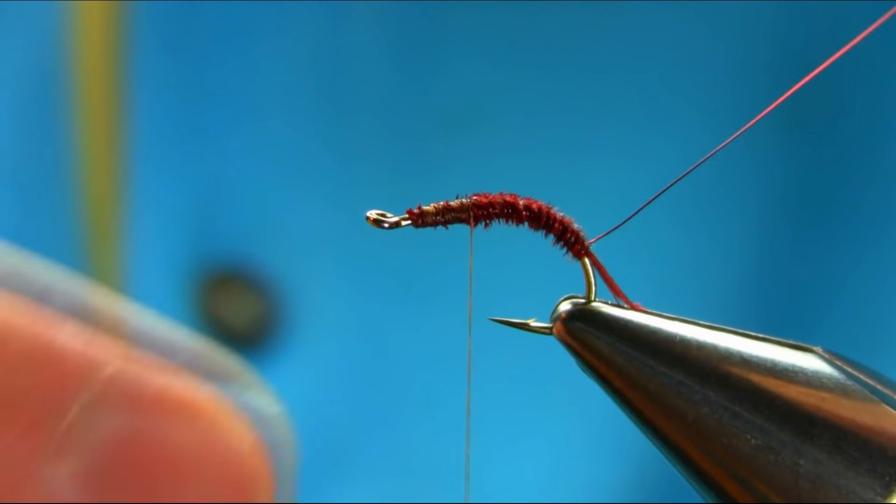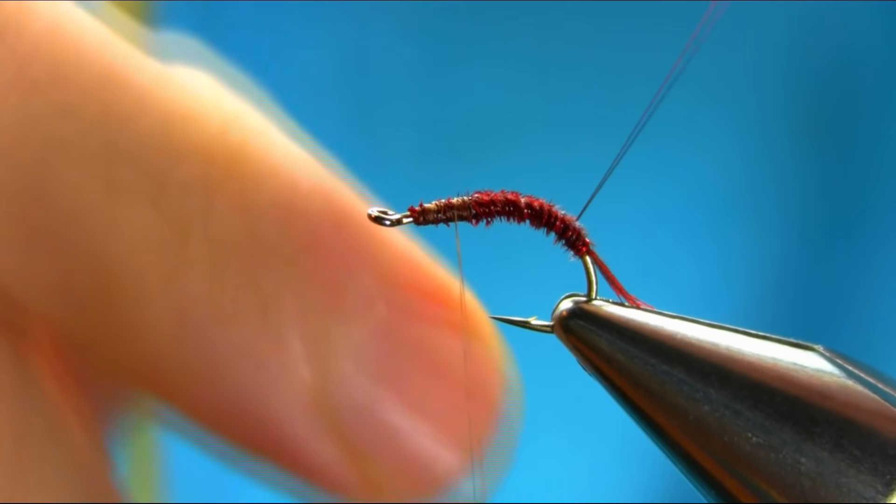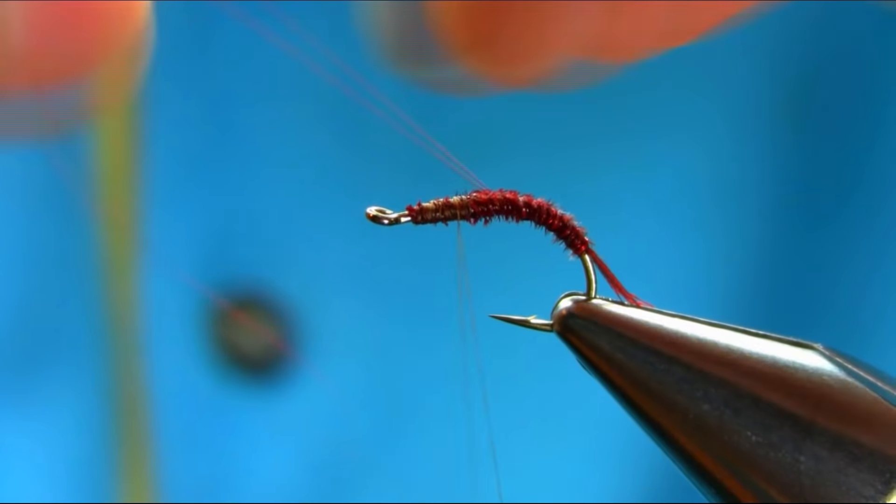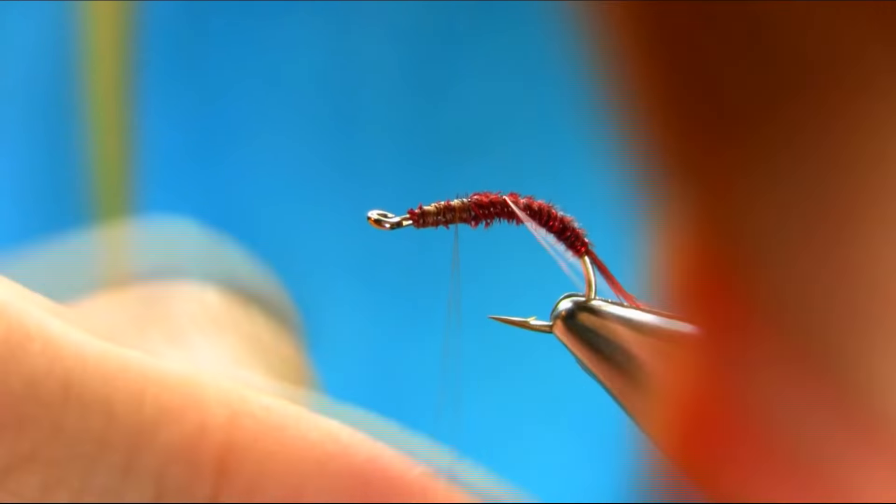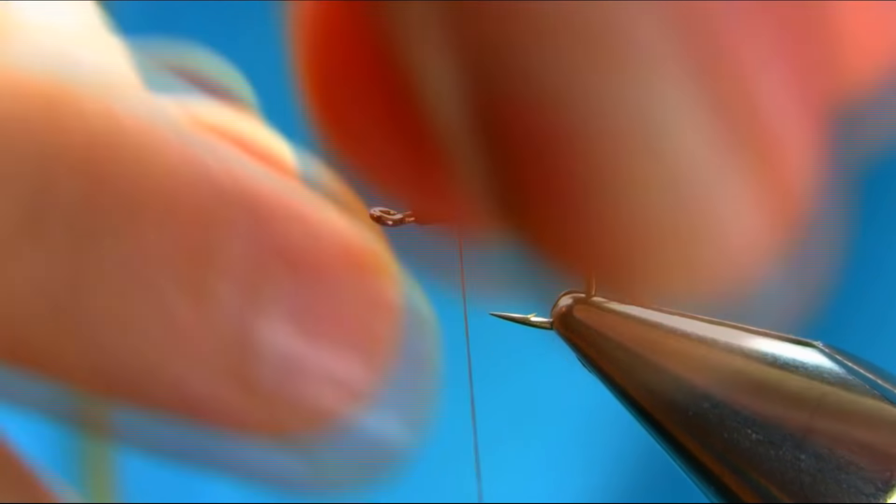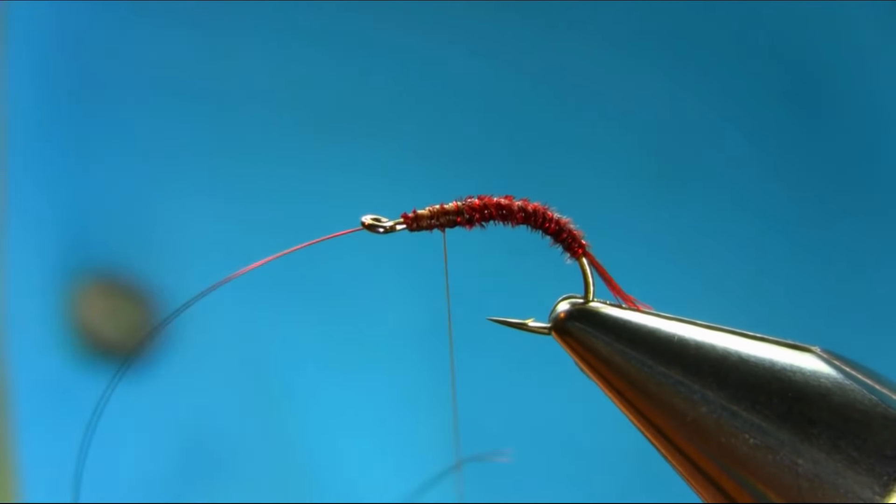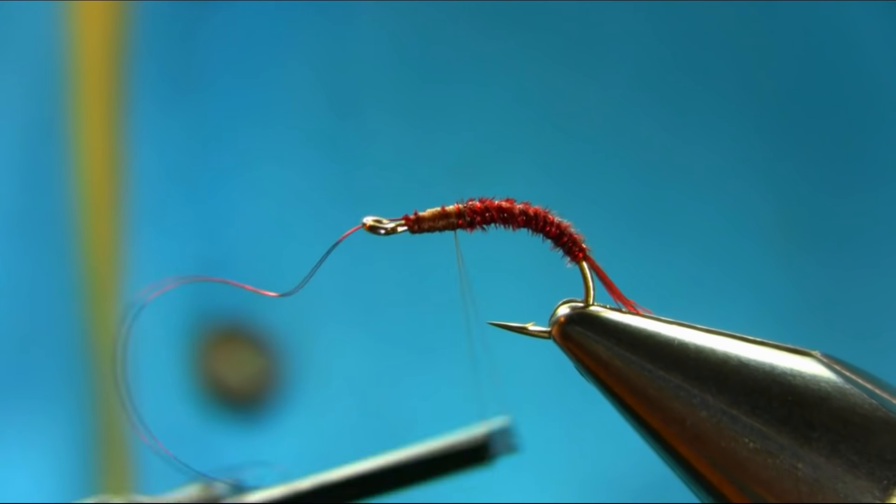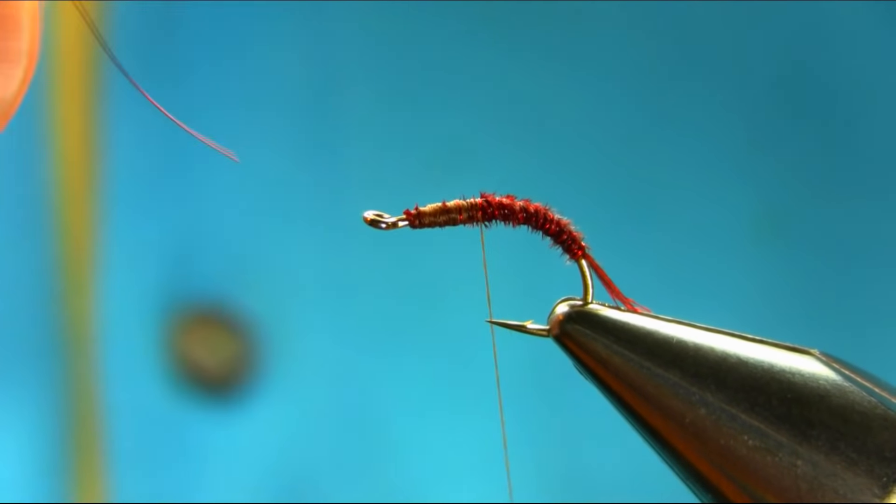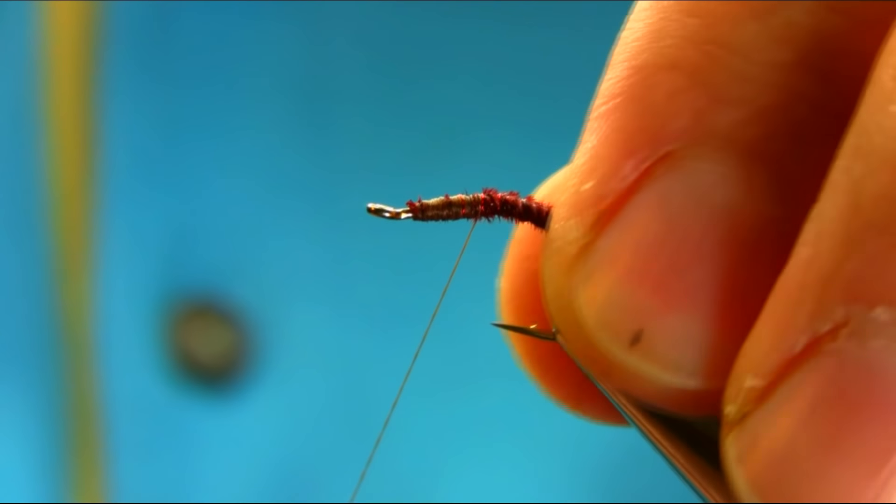Now all you have to do is bring your ribbing. Remember, just leave a decent amount of curve. And then take this extra piece off. That's all right to me.